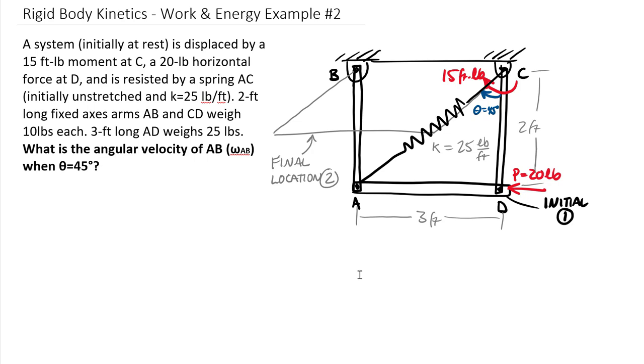The motion of this four bar linkage and the dimensions are pretty friendly. We have two fixed axes of rotation arms, one centered at point B, the other centered at point C. Each of these arms weighs 10 pounds. We additionally have a horizontal bar here AD.